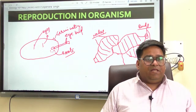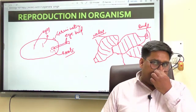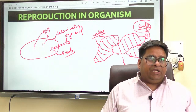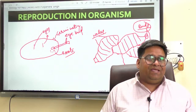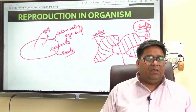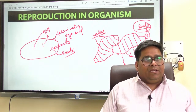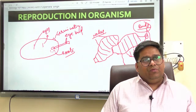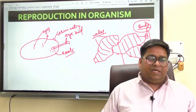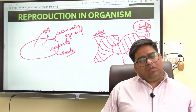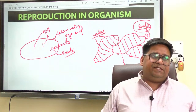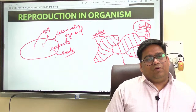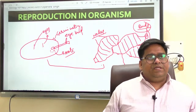The fleshy bud that you might have seen in ginger can produce a new plant in hydrophytes. This structure is called the turion. Is vegetative reproduction also a type of asexual reproduction? Yes, vegetative reproduction is asexual reproduction.